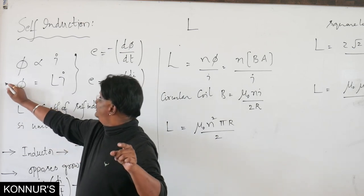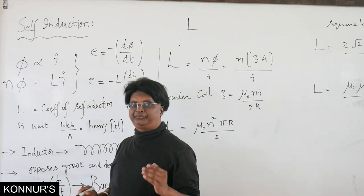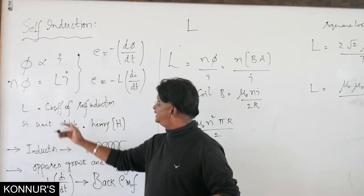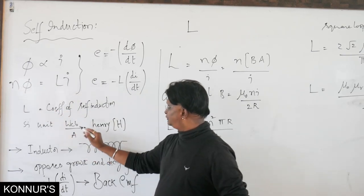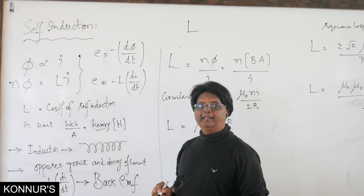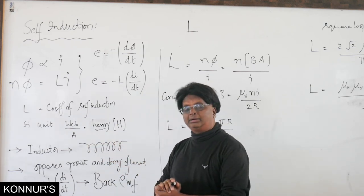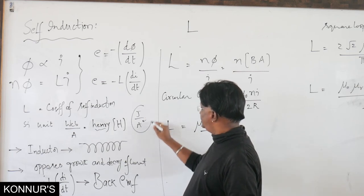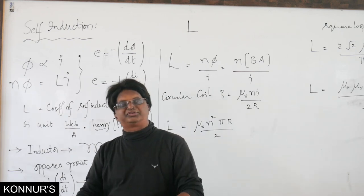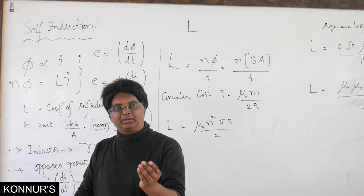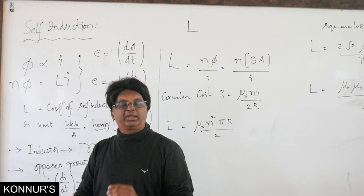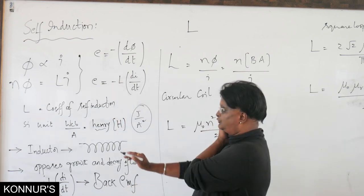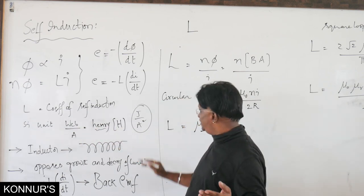For a coil of N turns: Nφ = LI. The coefficient of self-induction L has SI unit Weber per ampere, which is called the Henry (H). Since Weber = joule per ampere, Henry = joule per ampere squared. Remember this alternate form for dimensional analysis in examinations.